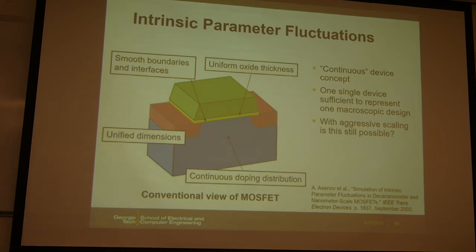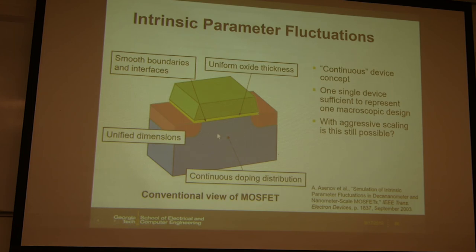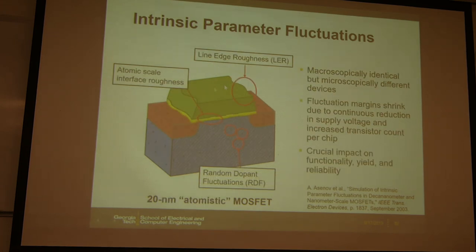Looking at the transistor schematic, the ideal geometry shows a bulk transistor with smooth boundaries between regions and continuous, uniform doping — for example, P-type doping in the substrate for NMOS. This physical picture may be true for large-scale transistors, but when we scale down to the 30 or 20 nm scale, this picture is no longer valid, and we see non-ideal effects in real devices.